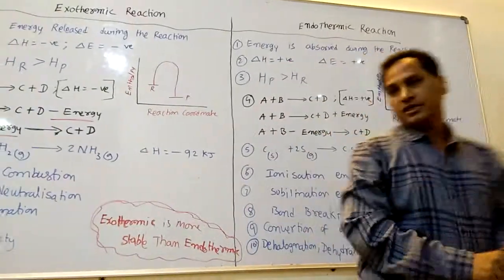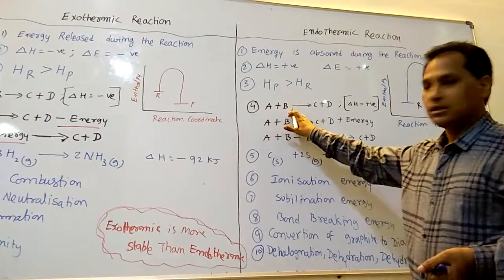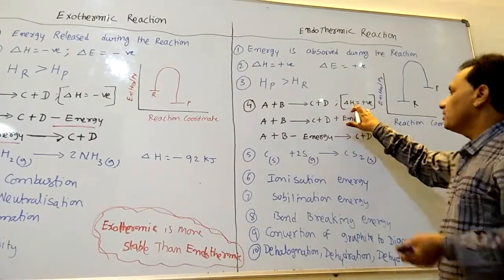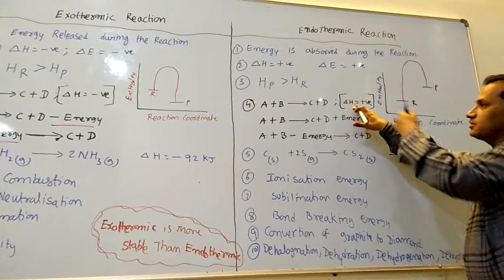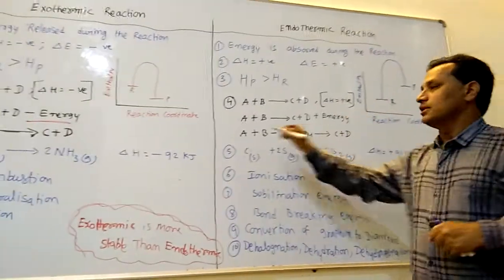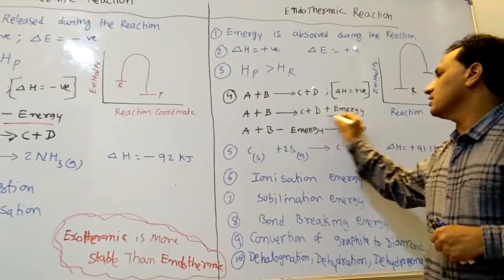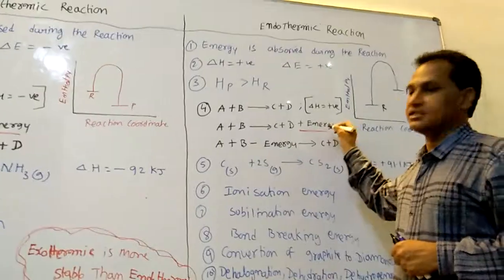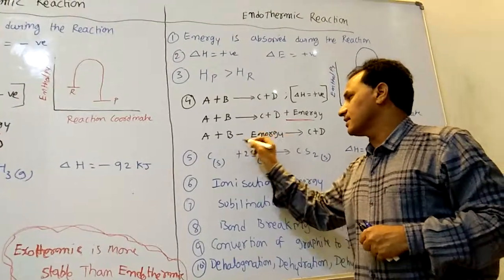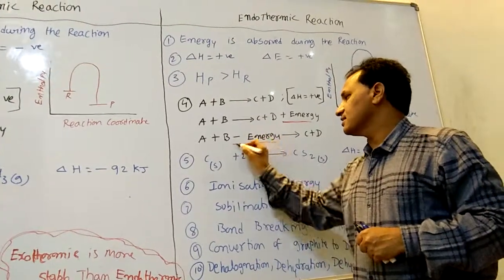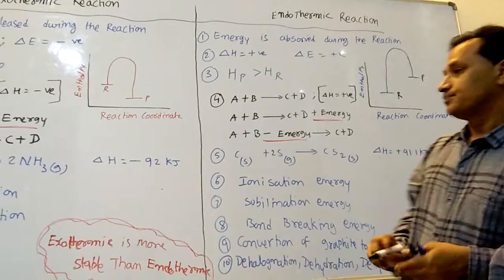How to represent endothermic: A + B → C + D, delta H is positive, meaning absorbing of energy. Or A + B → C + D plus energy in the product side. And A + B minus energy in the reactant side gives C + D — minus energy in the reactant side is endothermic.